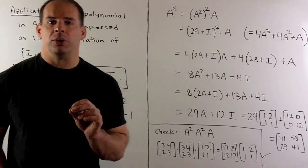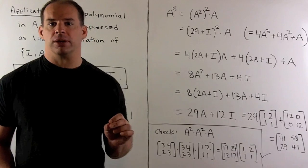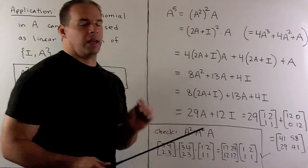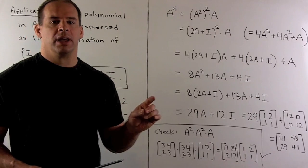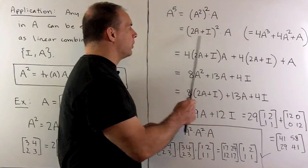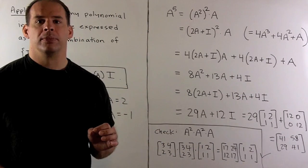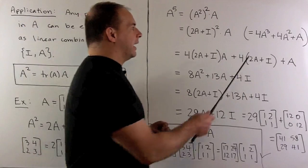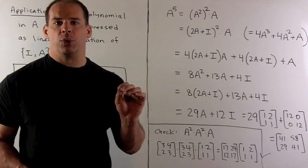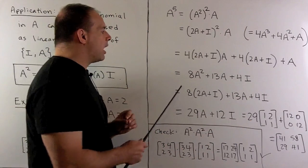Now, if I want to compute A to the 5th power, let's do it without ever doing an actual matrix multiplication. I'll write A to the 5th as A squared squared times A. A squared, I could replace with 2A plus I. And then we expand. So, that'll give me 4A cubed plus 4A squared plus A. I'm going to write A cubed as A squared times A. And then we'll take both A squareds, replace them with 2A plus I.